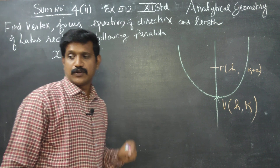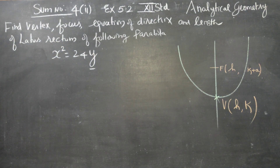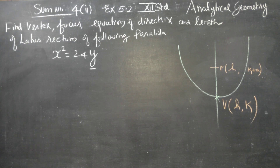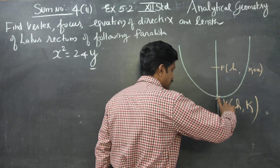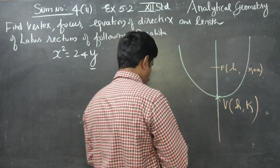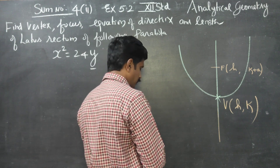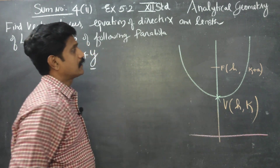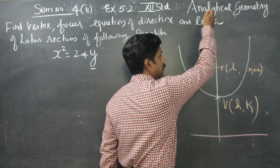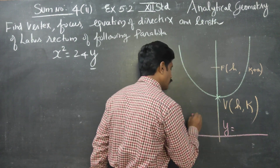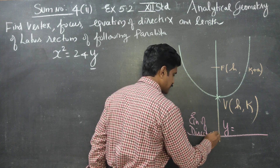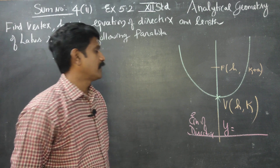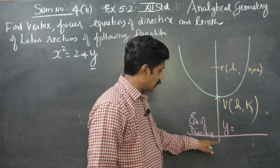Next we are entering into the directrix or length of lattice rectum. The directrix is a line which has an equidistance from the focus. The focus and the directrix are on opposite sides at equal distance. The line of symmetry is y, so the equation of directrix is written as y equals something.